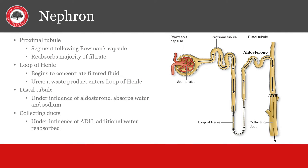The parts of the nephron consist of the proximal tubule, which is the segment following Bowman's capsule, and reabsorbs the majority of filtrates from the urine. The loop of Henle, which concentrates the filtered fluid - this is also where loop diuretics work and get their name. The distal tubule is where aldosterone acts to reabsorb sodium, and water follows by osmosis. And the collecting ducts where ADH absorbs free water.